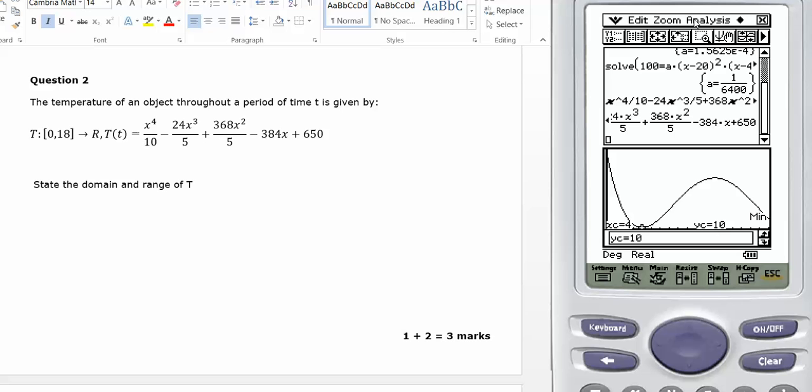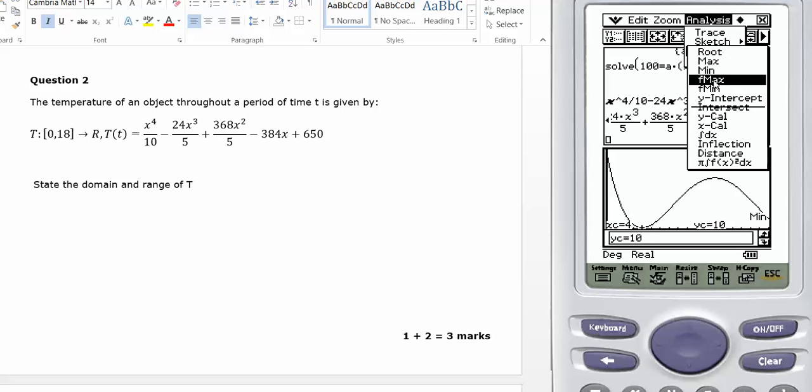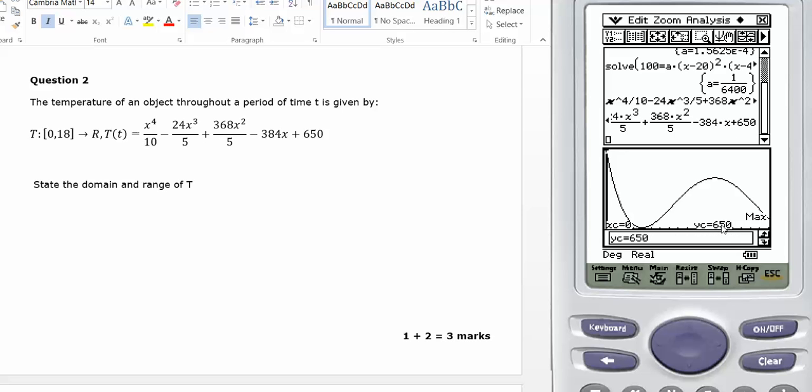And if I go analysis, G solve, F max, the largest Y value is 650. So my domain is 0 to 18 and my range is 10 to 650 square brackets on both.